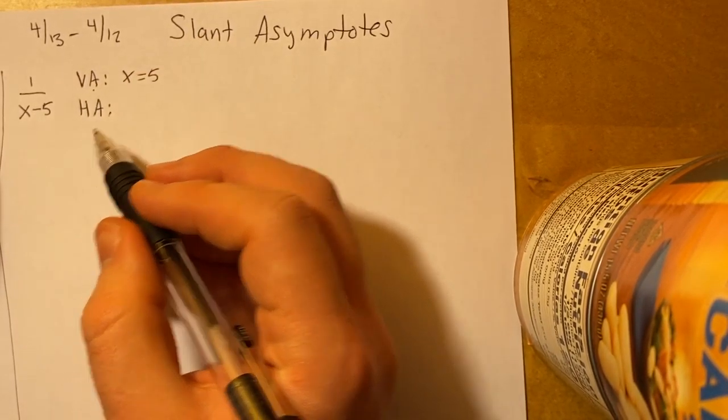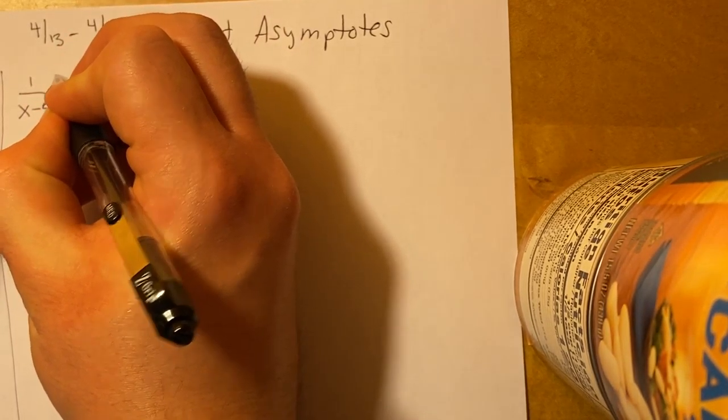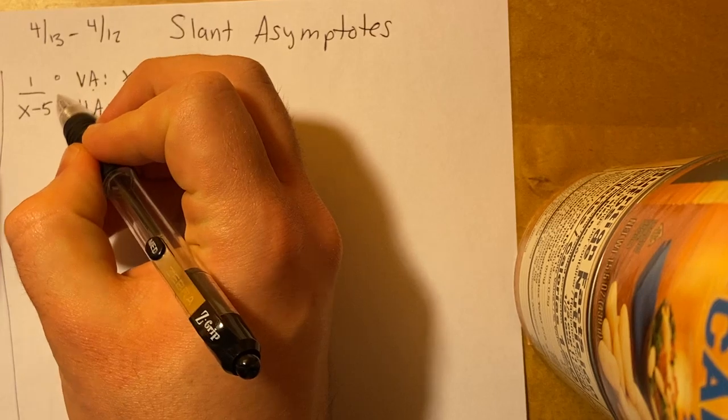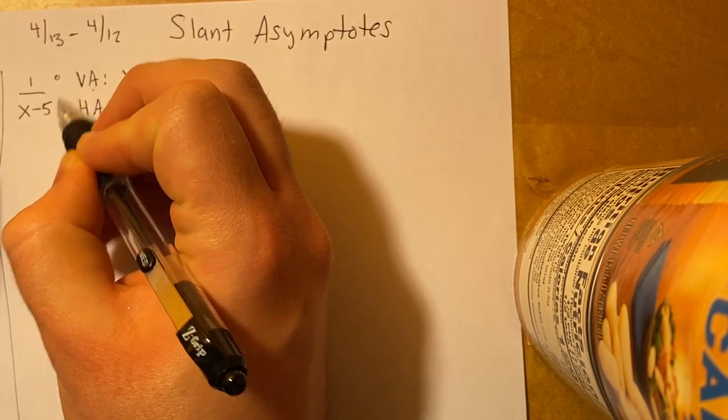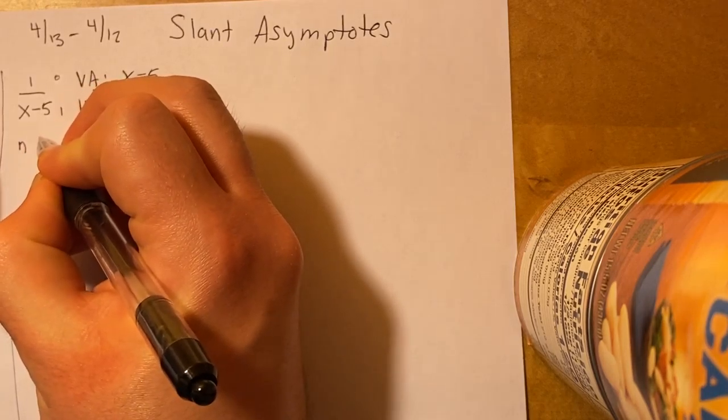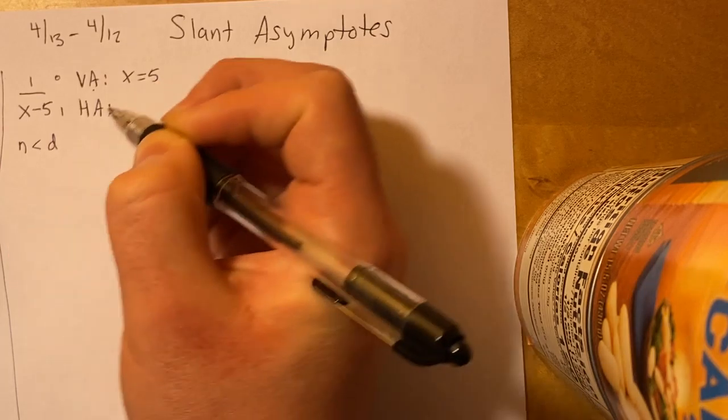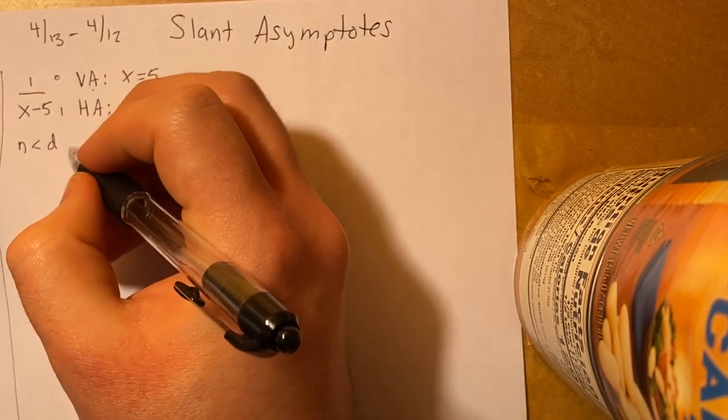Now for the horizontal asymptote, I notice that the degree of the top is 0. Remember, for numbers, the degree is 0, and the degree of the bottom is 1. So I know that the numerator is less than the denominator, which means the HA is y equals 0.